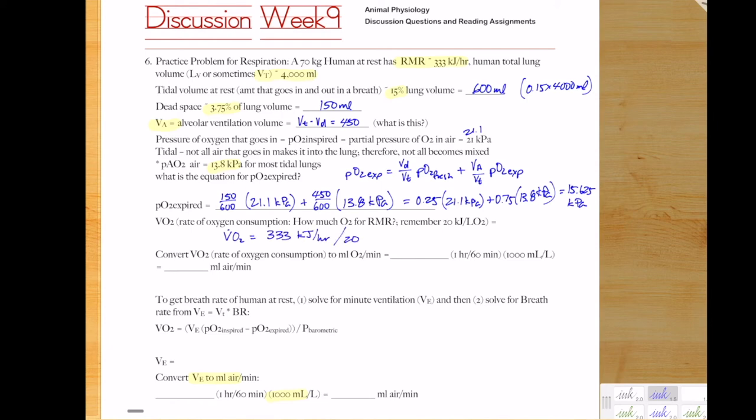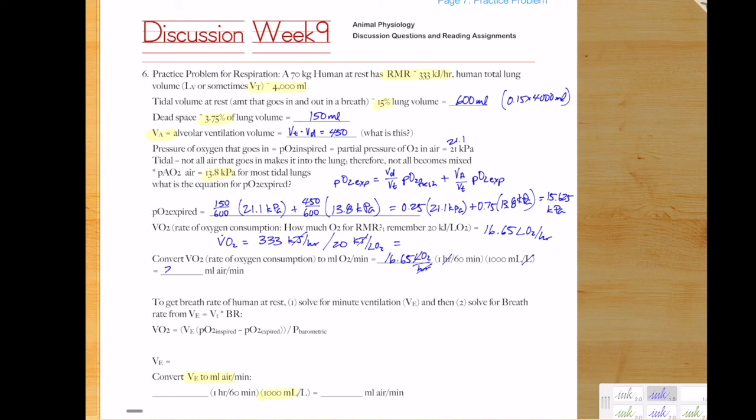Now notice that the metabolic rate is in kilojoules per hour. But we want to work with oxygen consumption. So we're going to use our conversion factor of 20 kilojoules per liter of oxygen consumed to get a VO2 value, convert RMR to VO2 of 16.65 liters per hour. And then we want to also get the per ml per minute conversion. So we multiply by one hour per 60 minutes and 1000 mls per liter to get 277.5 ml of O2 per minute.